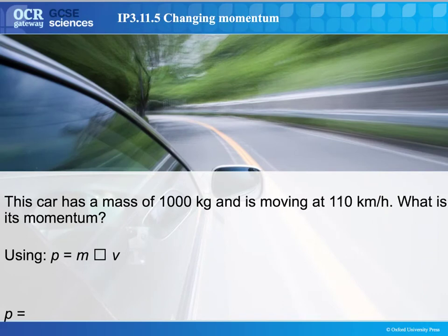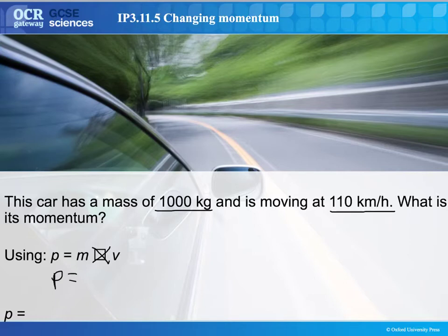In this example, we've got a car with a mass of 1,000 kilograms, moving at 110 kilometers per hour. We need to work out its momentum again using the equation P equals M times V. We've got our mass, so we can put that in — the mass is 1,000. But the velocity is given in kilometers per hour, and we need to change that into meters per second.